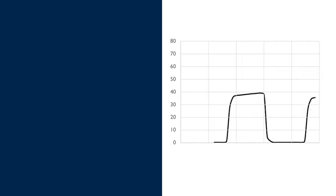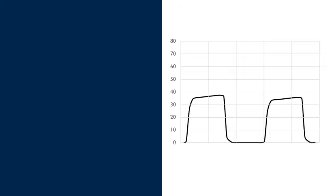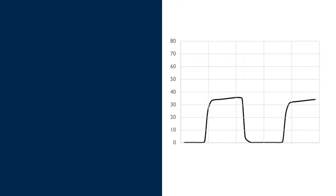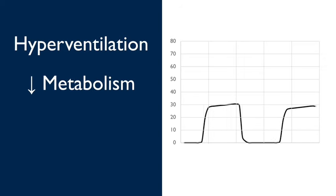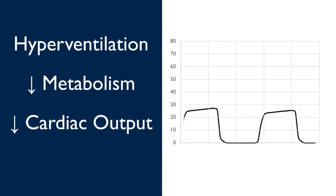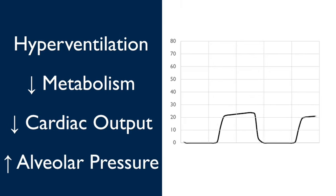Now, let's compare the normal with our first abnormal example. This starts off looking normal enough, but notice that the end-tidal is gradually decreasing. This can happen in any situation that causes the arterial CO2 to decrease, such as hyperventilation, or a decrease in metabolism. But remember, the end-tidal CO2 can also go down by anything that causes an increase in dead space, such as decreased cardiac output, a pulmonary embolism, or hyperexpanded alveoli.